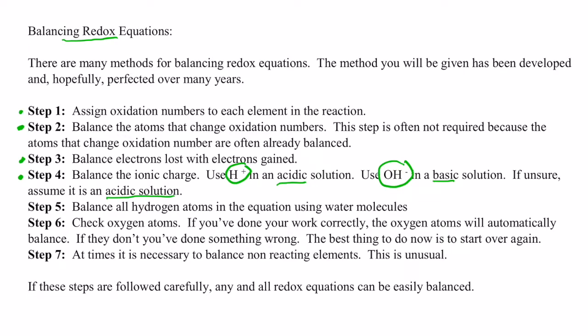Step five, you balance all of your hydrogen atoms in the equation on both sides using water molecules. And step six, check your oxygens. If you've done your work correctly to this point, all the oxygens will balance. If they don't, you did something wrong, and the best thing to do is to start from step one — just start right at the beginning.